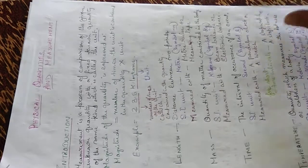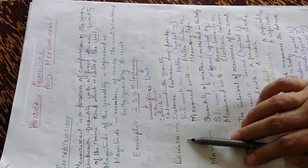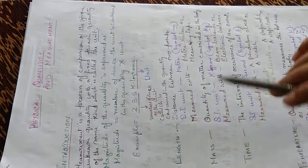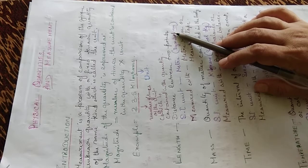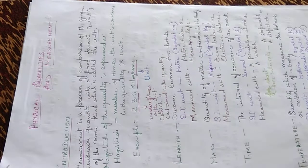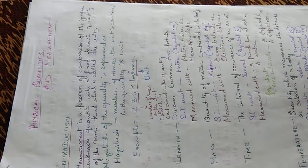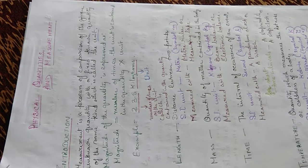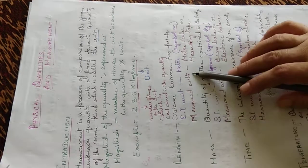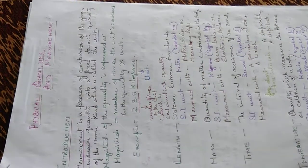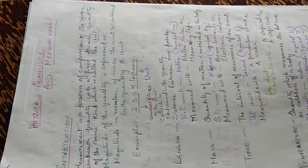Length is the distance between two given points. The distance between the two points is the length. Its SI unit is meter, and the symbol is small m. It is measured with a meter ruler or a measuring tape.